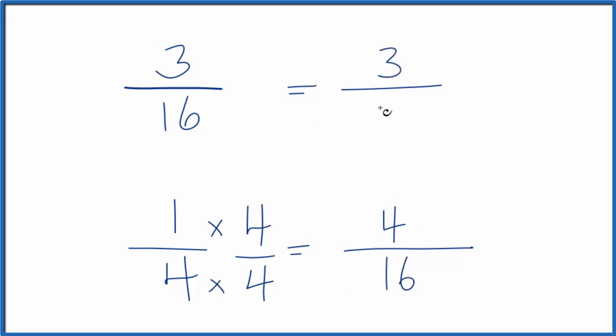And here we have 3 sixteenths. Now the denominator, that's the same, we can compare the numerator. 4 is larger than 3, so 1 fourth, that's going to be larger than 3 sixteenths.